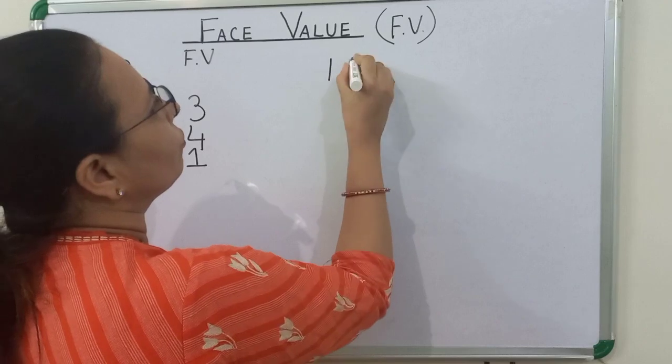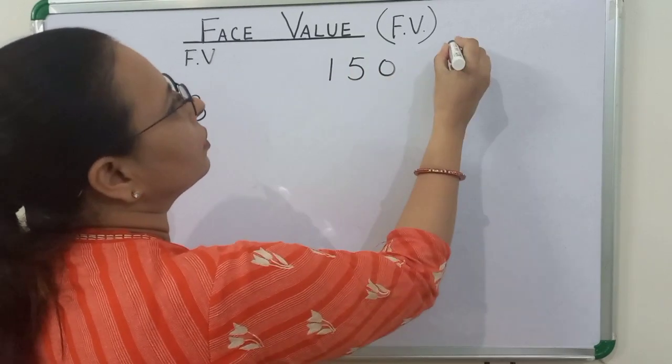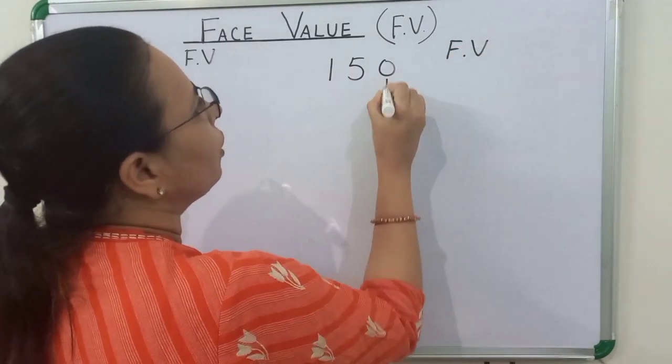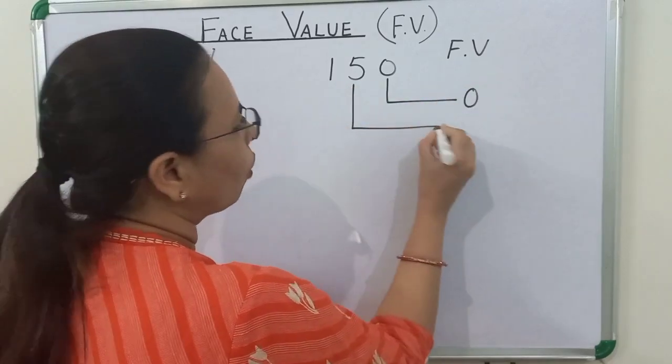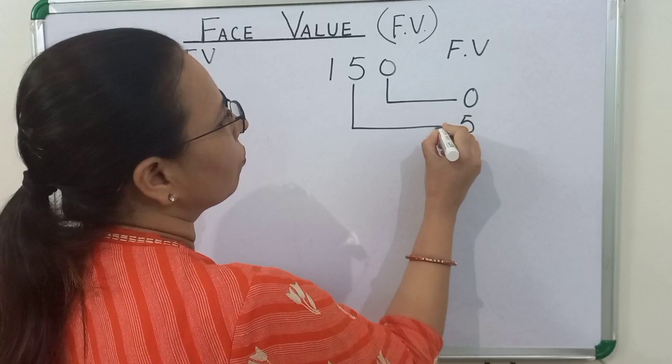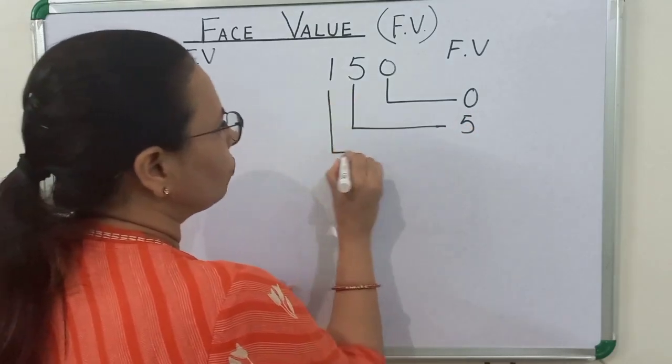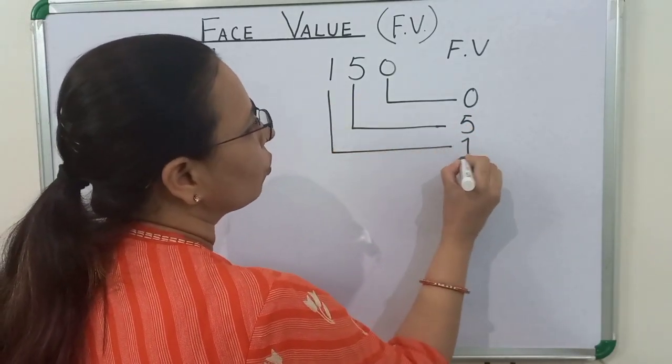In 150, the face value of 0 is 0. The face value of 5 is 5, and the face value of 1 is 1.